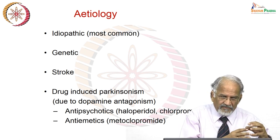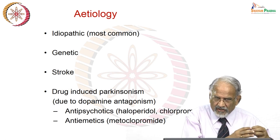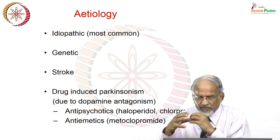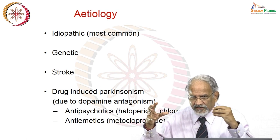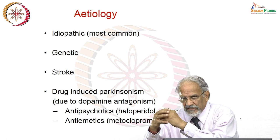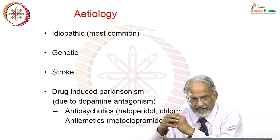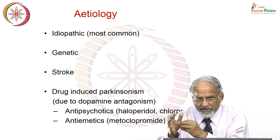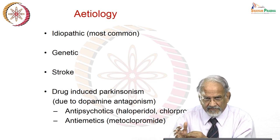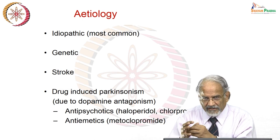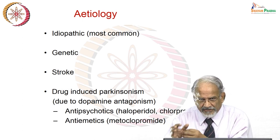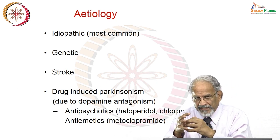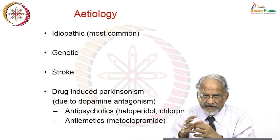Another group of agents that can cause Parkinsonism are drugs which block the dopaminergic receptor. This dopaminergic receptor blockade will cause temporary symptoms of Parkinsonism — also called Parkinsonism-like syndrome or extrapyramidal reaction of drugs. This will naturally happen with all drugs which have anti-dopaminergic property or dopamine receptor-blocking action.